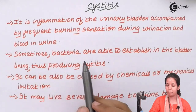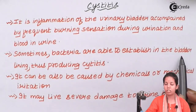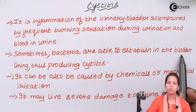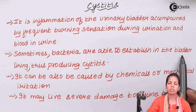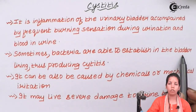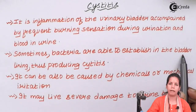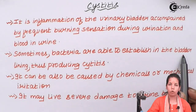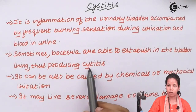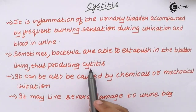Sometimes bacteria are able to establish themselves in the bladder. This can occur through the use of catheters applied to patients in hospitals during certain injuries directly to the urinary bladder — catheter infection can cause streptococcal or bacterial infection. Also, in certain conditions of diabetes or glucosuria, your urinary bladder may get infected, producing cystic infection in that region.